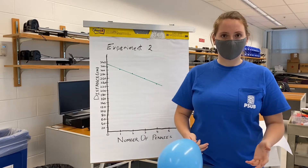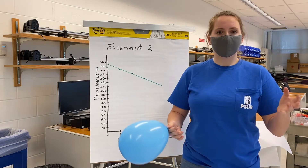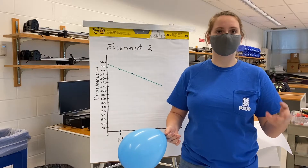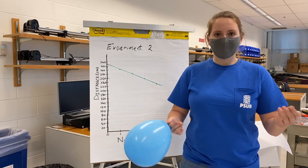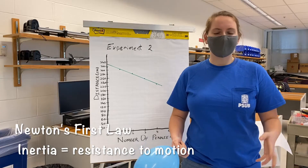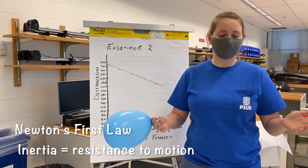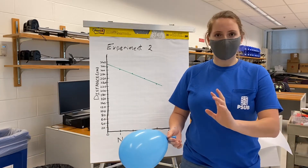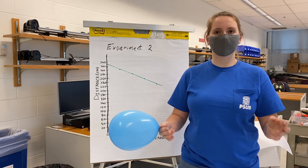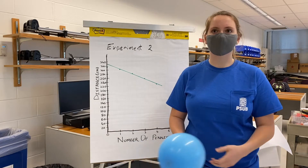For the second part, we had more mass and we saw that it was harder to move the balloon when there was more mass. This derives from the concept of inertia. Put simply, when we have more mass, there's more resistance to the change in motion.